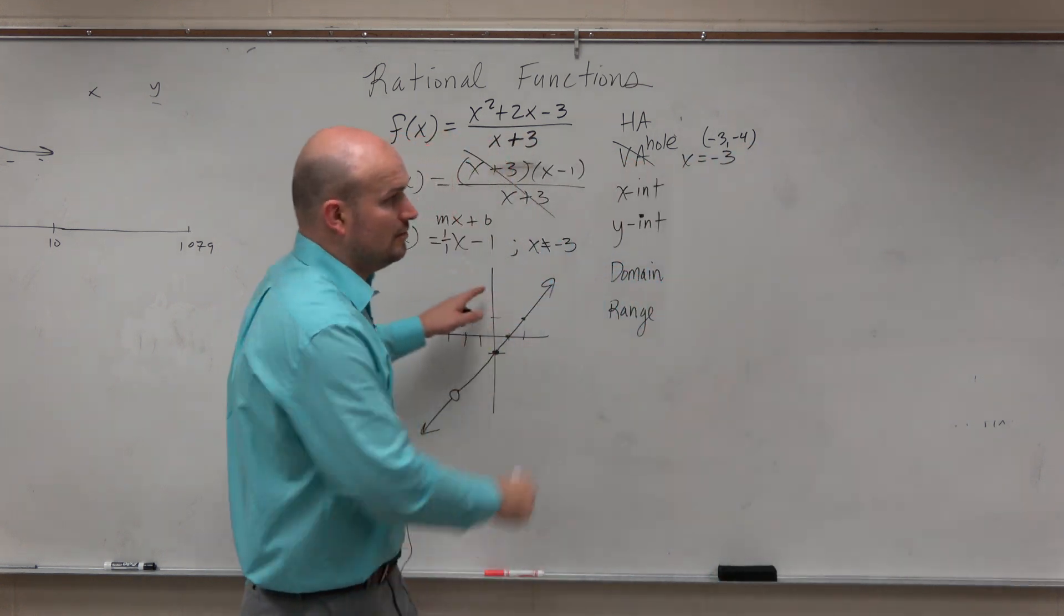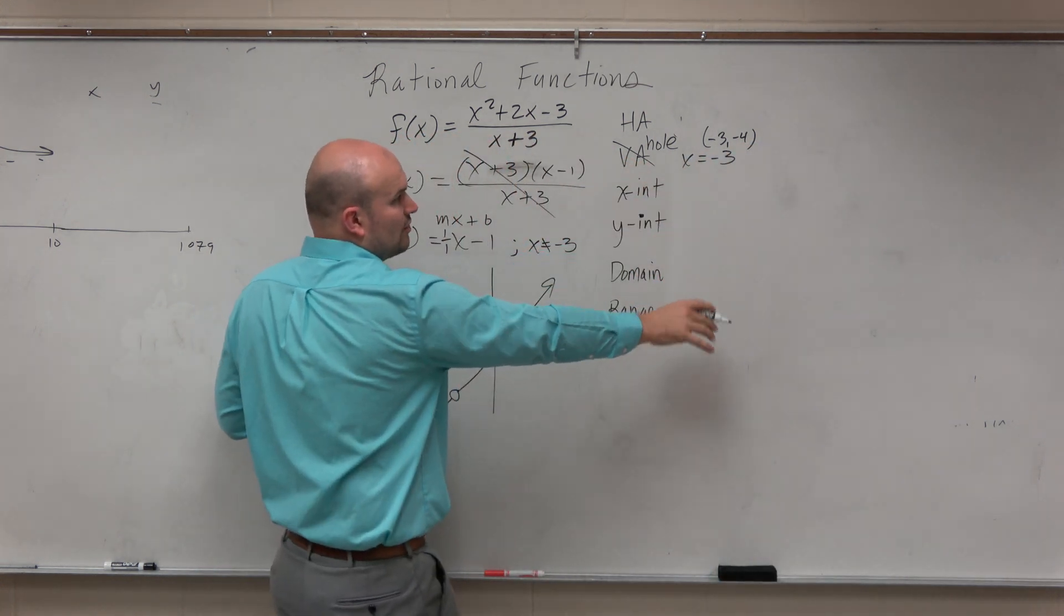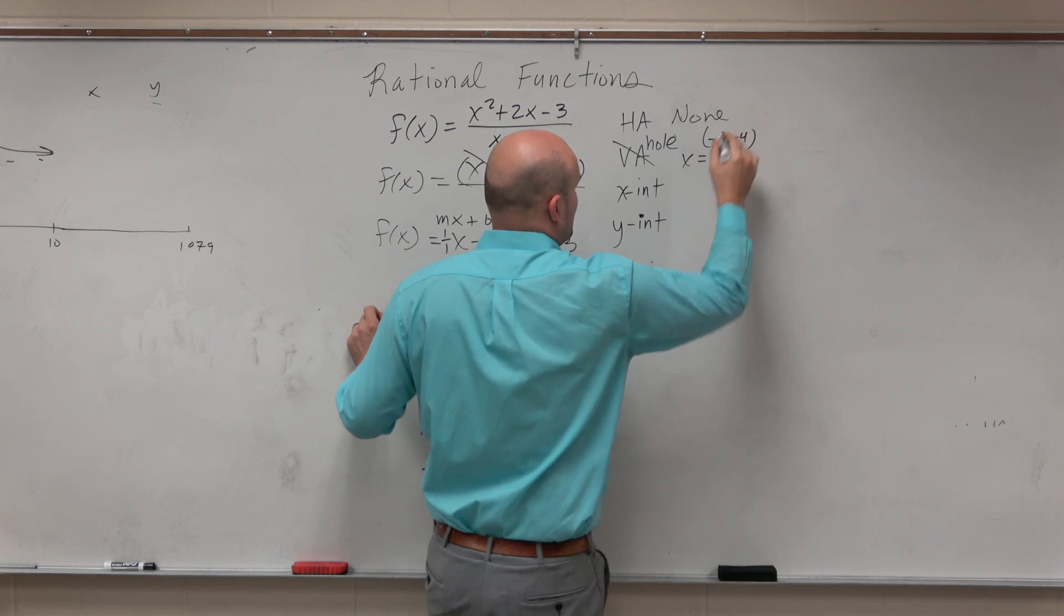Now, is there a horizontal asymptote? Well, we already actually defined that from the horizontal asymptote test, right? That's none.